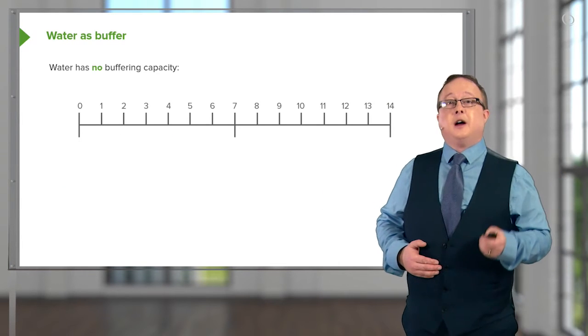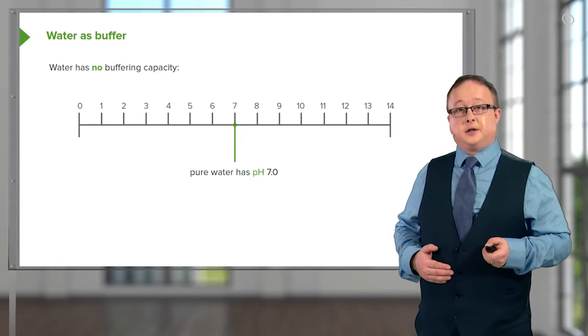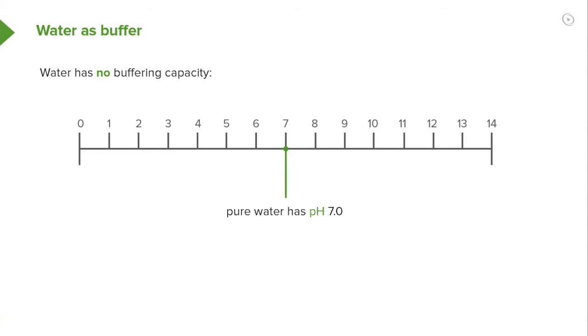Water itself has no buffering capacity. Pure water has a pH of 7.0 as we said before and 1.0 liters of water plus a tiny amount of hydroxide ion has a pH of 12.3. When we do the same with acid, let's say 0.02 molars of hydrochloric acid,